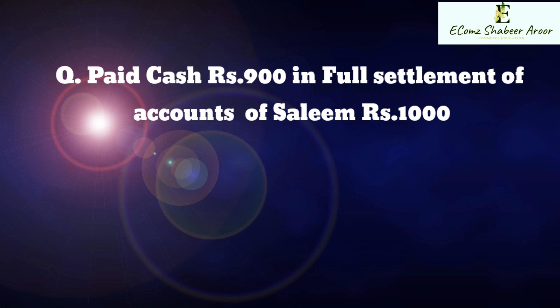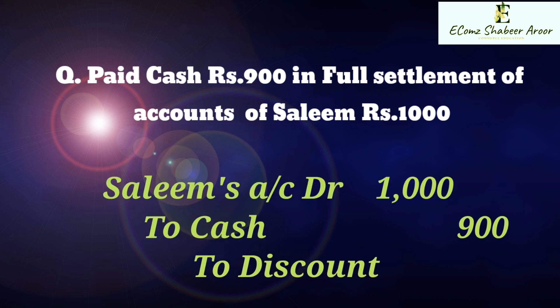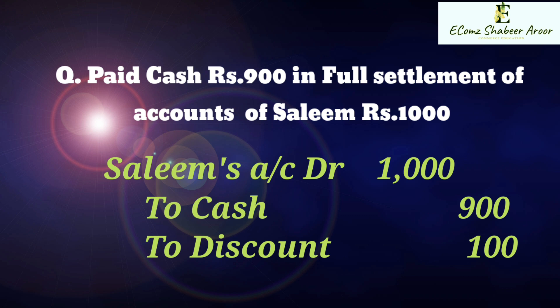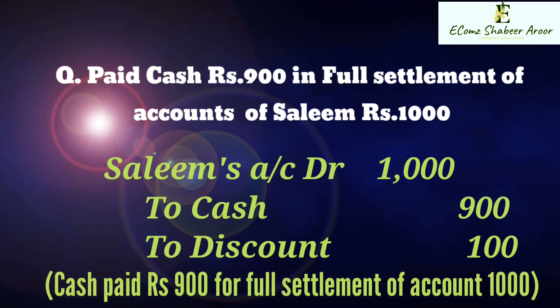The cash discount example: Salim's account debtor 1,000. That account is closed at 1,000. Cash received is Rs. 900, to cash Rs. 900. To discount Rs. 100. This discount received is income — it is a credit. To discount 100. This is the cash discount receive case.